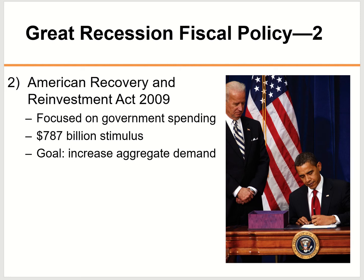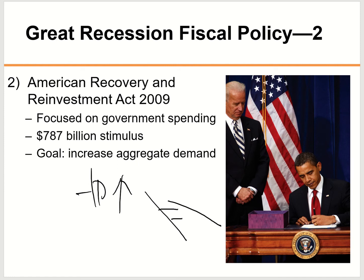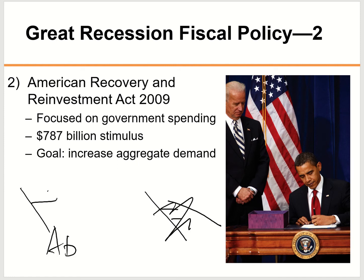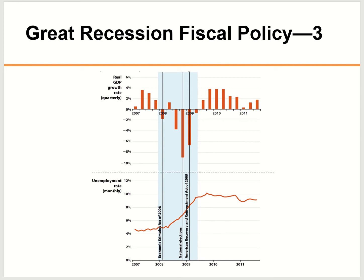Also in 2009, we had the American Recovery and Reinvestment Act, where the government itself spent $787 billion. This increase in government spending would cause an increase in aggregate demand, shifting the AD curve to the right. This shows our real GDP and unemployment in those years — 2008 was a bad year, 2009 was a very bad year. That's why we had those Stimulus Acts and recovery funding for the economy.